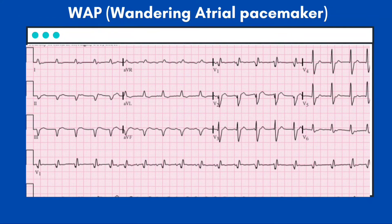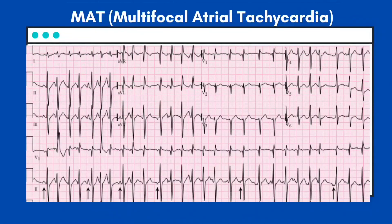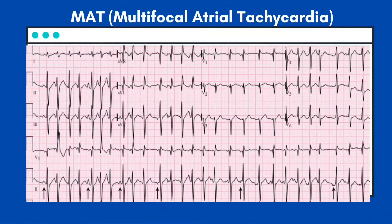Multifocal atrial tachycardia (MAT) is characterized by a rate of greater than 100 per minute with a P wave preceding each QRS complex, originating from multiple atrial ectopic foci. It is evidenced by a minimum of three different P wave morphologies on the 12-lead ECG with variable PP, PR, and RR intervals. The ventricular response is irregularly irregular given the unpredictable timing of atrial depolarization and variable AV conduction.